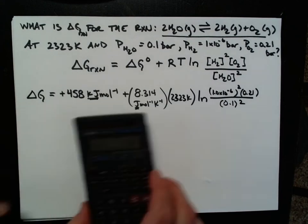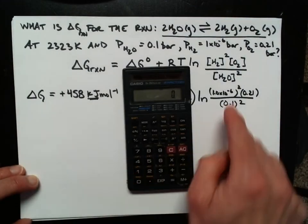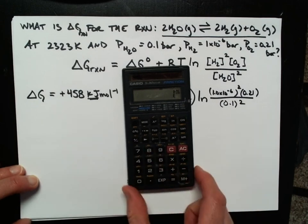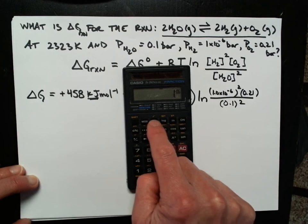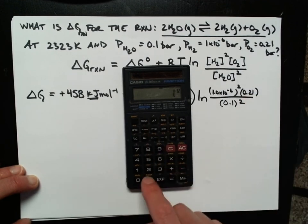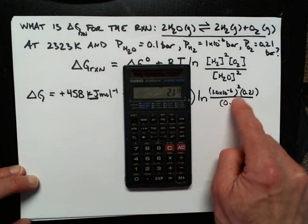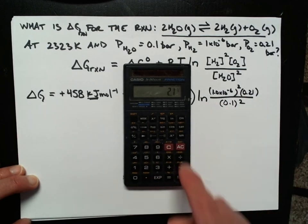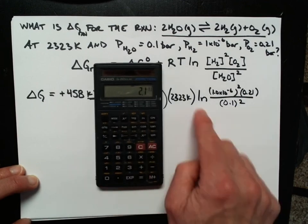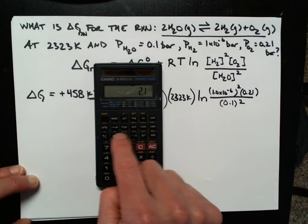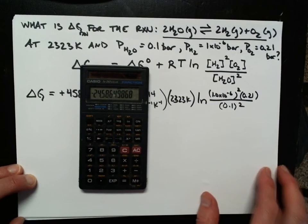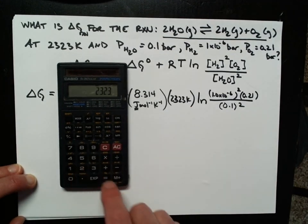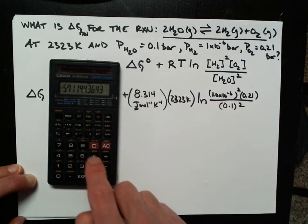I'm going to start over here with this. Let's see. 1 times 10 to the negative 6, so that's going to be 1 exponential 6, and I want to make that negative. Now I'm going to square it, times 0.21, and I'm going to divide that by 0.1 squared, so I'm going to divide by 0.1, and I'll divide by 0.1 again. That'll do the trick. So now I need to take the natural log of this value, and now I'm going to take this and multiply that by 2323, and I'll take this whole answer and multiply that by 8.314.